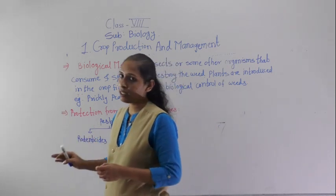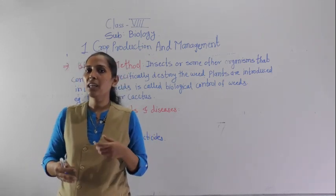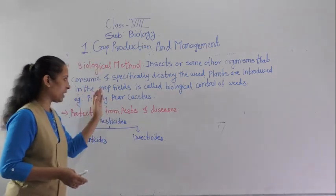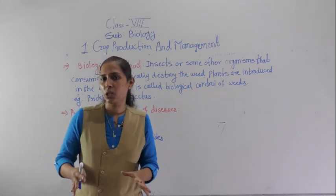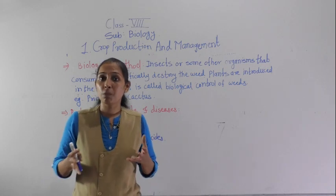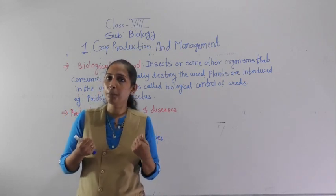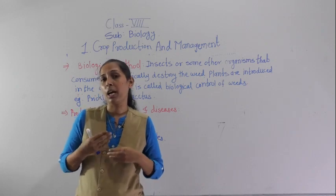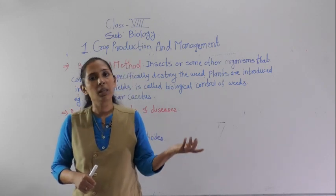These rodenticides and insecticides must be used in a very small amount. They can be sprayed using a hand spray machine, and if the crop area is large, a low-flying aircraft can be used. All these chemicals are very poisonous for human beings. If farmers use too much pesticide, it gets mixed into the water, absorbed by the plant, and if we eat the fruits or grains from that plant, it will harm our body.